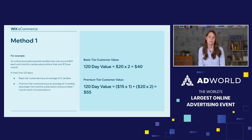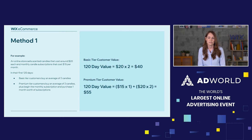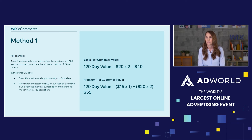Now let's apply this to our example, focusing on the customer's first 120 days. We're still an online store selling candles for $20 and subscriptions for $15. In those first 120 days, basic tier customers buy an average of two candles, and premium tier customers buy an average of two candles plus begin their monthly subscription purchasing that first month of the subscription.